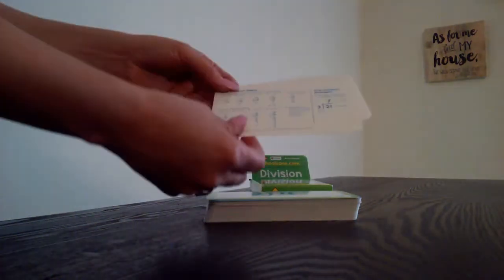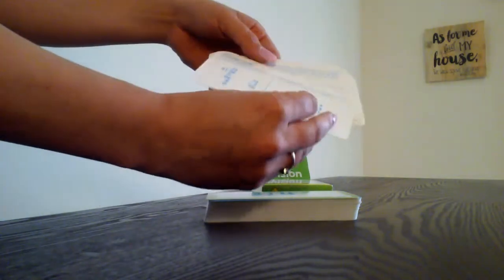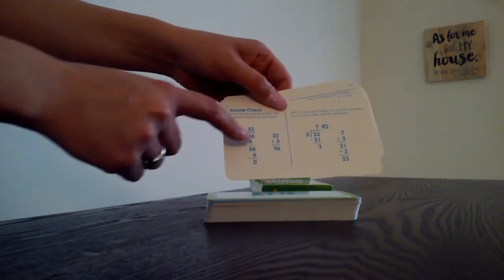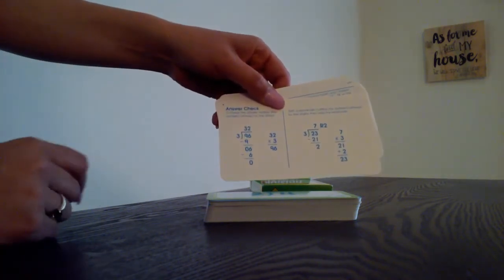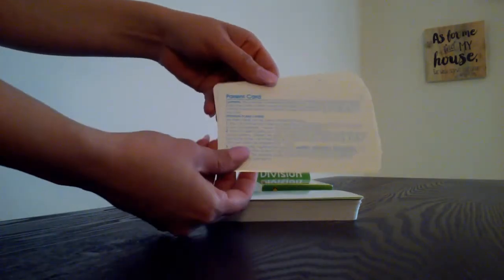This box also comes with these here, the division steps. This card here shows you how you can teach your child how to multiply the answer to get the correct answer to make sure your problem is correct.